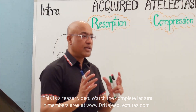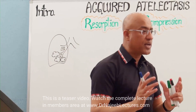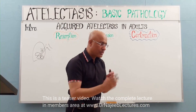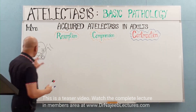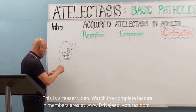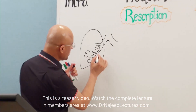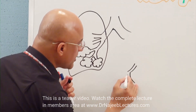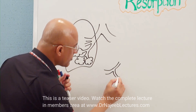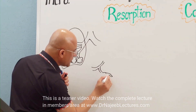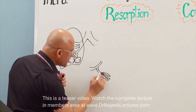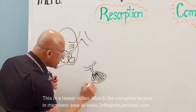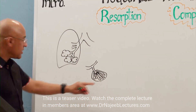In adults, previously properly inflated air spaces in the lungs may undergo deflation and produce areas of lung parenchyma which are under-aerated. The collapsed part of the lung — let's say this area in the diagram — will be considered atelectatic, while the surrounding area remains normal.